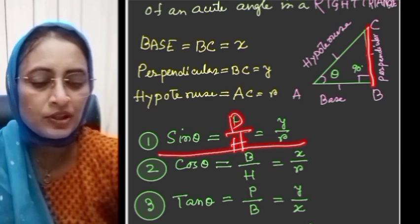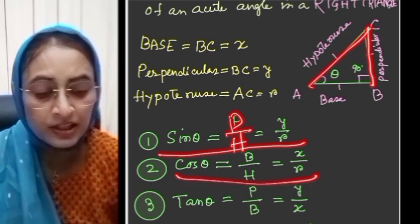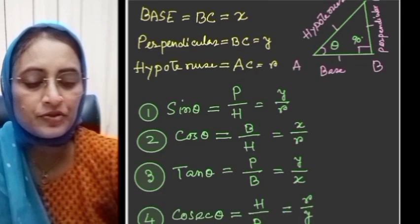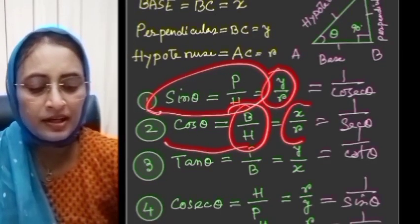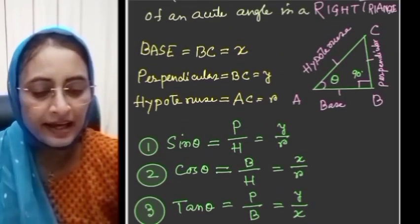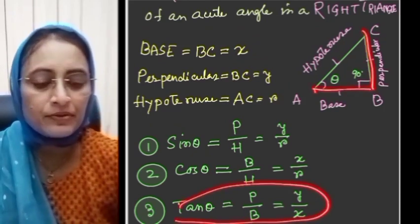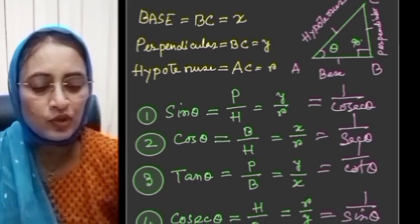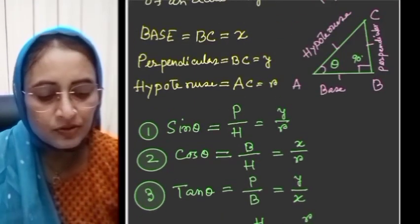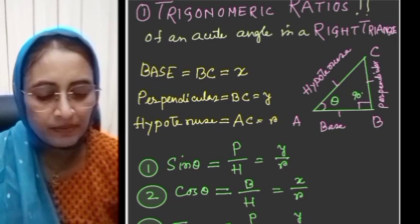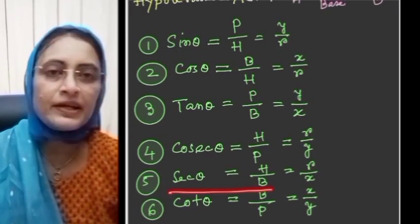The trigonometric ratios are defined as follows: sine theta equals perpendicular by hypotenuse, that is y divided by r. Cos theta equals base by hypotenuse, that is x by r. Tan theta equals perpendicular by base, that is y by x. Cosec theta equals r by y. Sec theta equals r by x. Cot theta equals x by y.